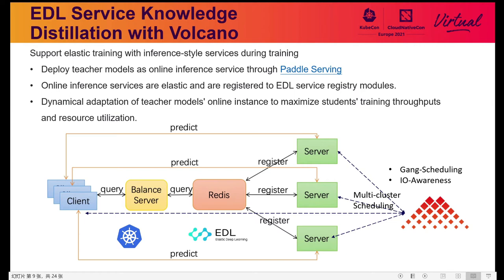EDL leverages Kubernetes and Volcano to optimize knowledge distillation training. EDL supports elastic training with inference-style services during training, deploying the teacher model as an online inference service through PaddleServing. A service registry discovery module is developed by EDL, enabling dynamic adaptation of teacher model online instances to maximize student training throughput and resource utilization. With K40 inference card clusters and V100 training clusters, EDL uses Volcano for multi-cluster scheduling. Gang scheduling is used for knowledge distillation jobs to avoid training resource deadlock, and IO-awareness in Volcano maximizes RDMA usage in the training cluster.